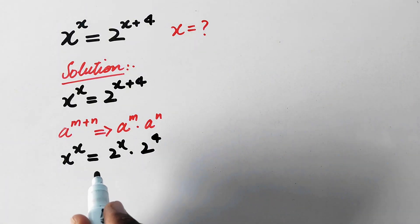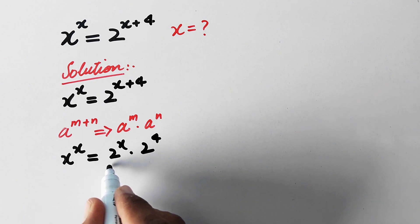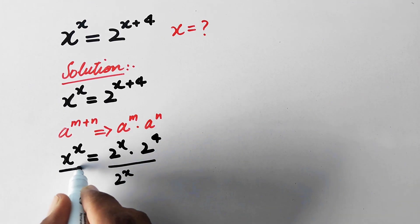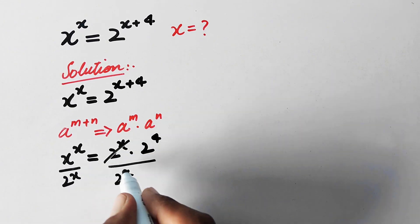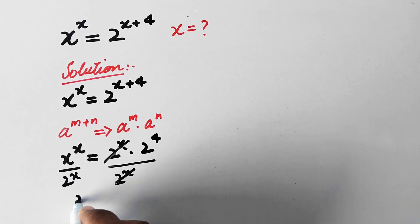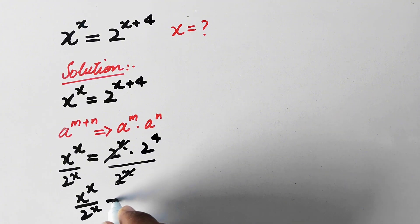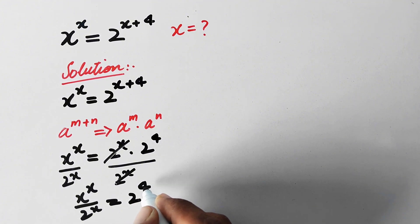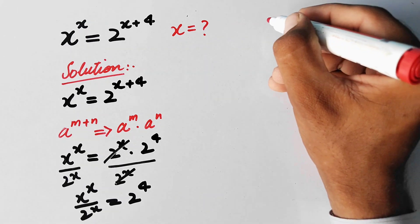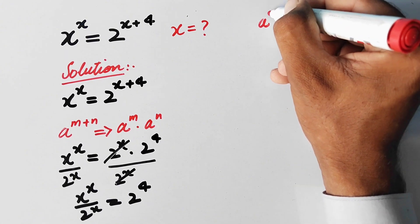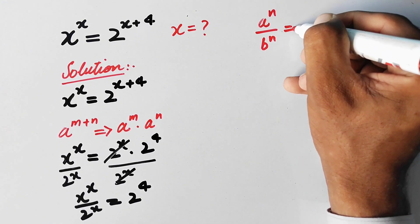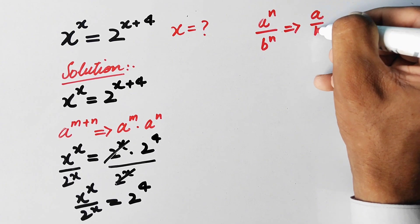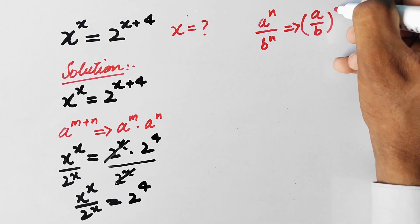Now to simplify, we will divide both sides by 2 power x. This 2 power x will be cancelled. We are left with x raised to power x over 2 power x is equal to 2 raised to power 4. Now another rule of exponents is applied: a power n over b power n can be written as a over b whole power n.